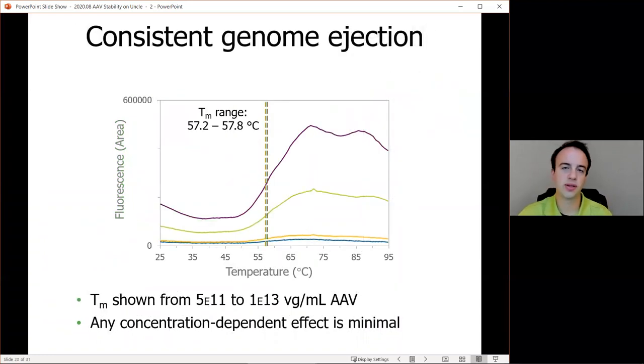If we want to compare that across different concentrations of AAV9, we can see here between 5E11 and 1E13 viral genomes per milliliter, a very nice consistent genome ejection behavior. And actually we can go up even higher to 1E14 viral genomes per milliliter, but doing so kind of compresses all the data. So any concentration dependent effect that we can see is minimal.